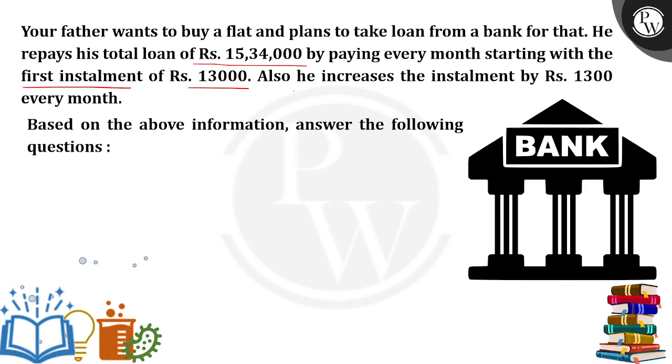So this is very simple. The first installment A₁ is equal to Rs. 13,000, and every month he is increasing the installment by 1,300. That is nothing but the common difference, which is 1,300.